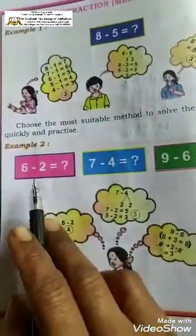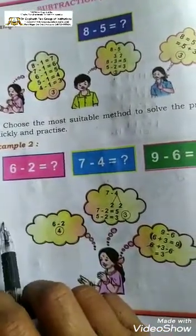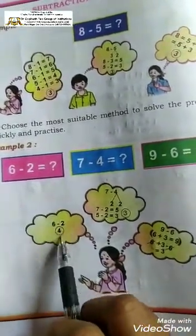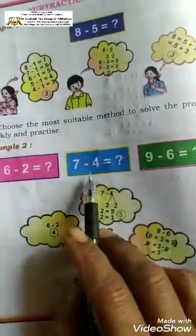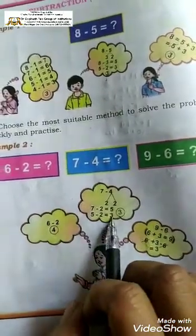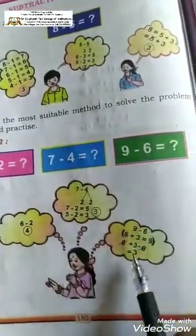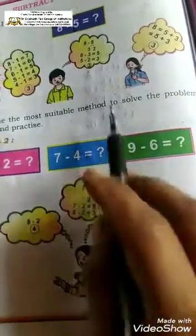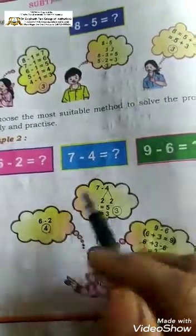In the same way, 6 minus 2 is 4. 7 minus 4 is 3. 9 minus 6 — there are 3 methods. 6 minus 2 is normally 4.